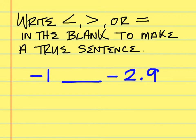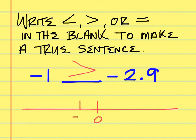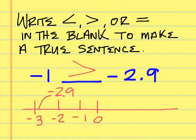Write less than, greater than, or equal to: is negative 1 less than, greater than, or equal to negative 2.9? It is greater than. Here is the number line — you have 0, negative 1, negative 2, negative 3 — right there is negative 2.9. Which one is furthest to the right? Negative 1. That's why the mouth opens to the negative 1; it is the greater number.